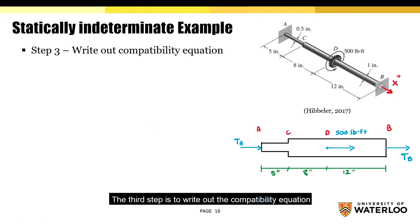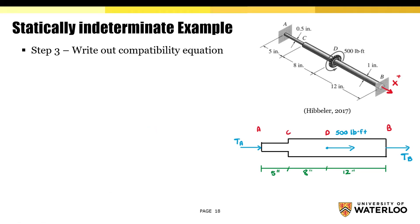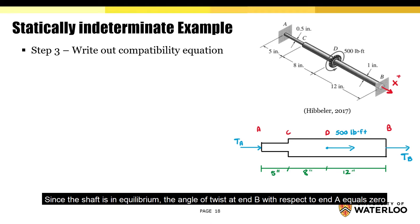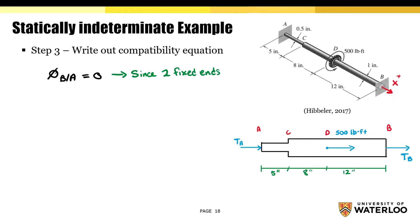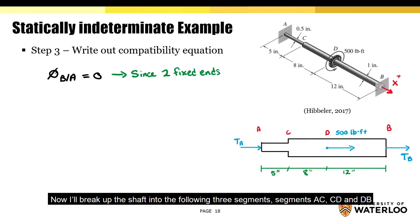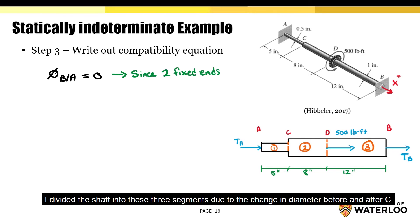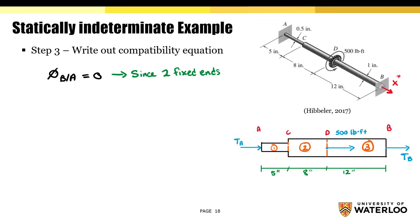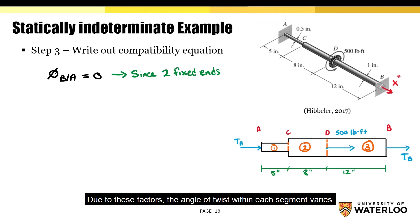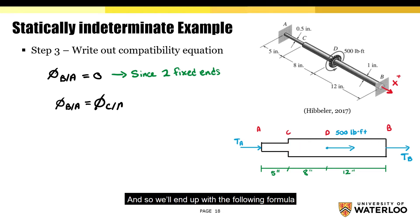The third step is to write out the compatibility equation. Since the shaft is in equilibrium, the angle of twist at point B with respect to point A equals 0. I'll break up the shaft into three segments: AC, CD, and DB. I divide the shaft into these three segments due to the change in diameter before and after C, as well as the applied torque at point D. Due to these factors, the angle of twist within each segment varies, so we'll end up with the following formula.